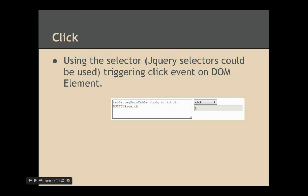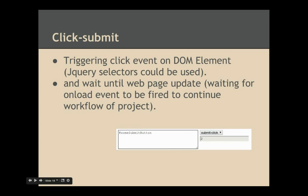CBA uses the click action to trigger a click event on a DOM element, which it finds using a selector. jQuery selectors can also be used. The click submit event is similar to the click event, but additionally tells CBA that it must wait for the page to update — useful for clicking submit buttons.